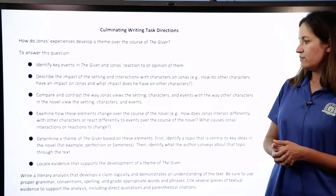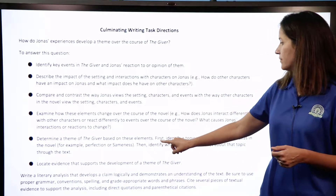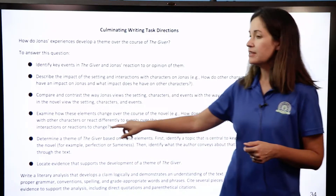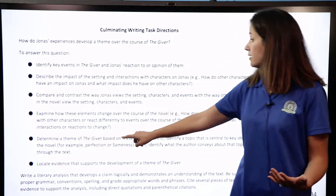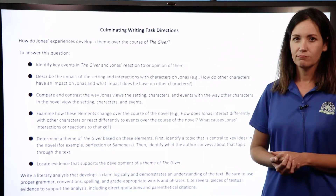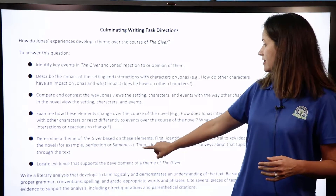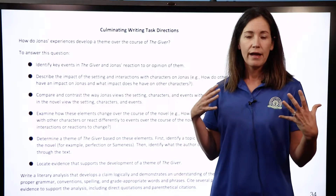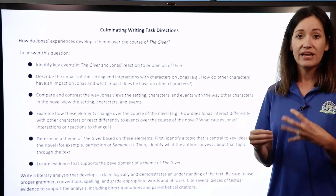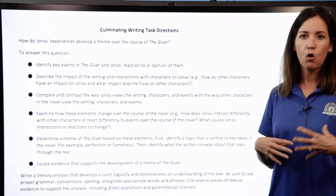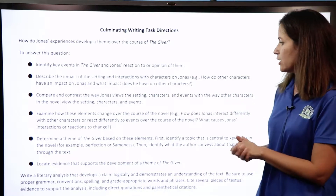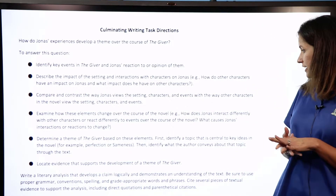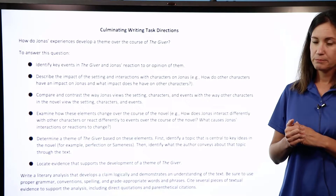Determine a theme of The Giver based on these elements. First, identify a topic central to key ideas in the novel — for example, perfection, sameness, or uniformity. Then identify what the author, Lois Lowry, conveys about that topic through the text. You're going to write a literary analysis that develops a claim logically and demonstrates an understanding of the text.